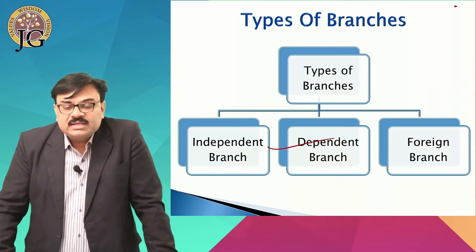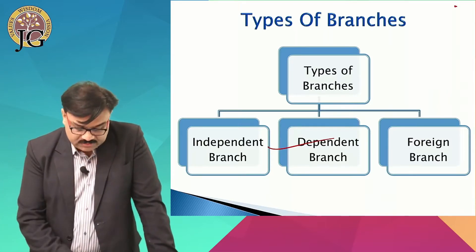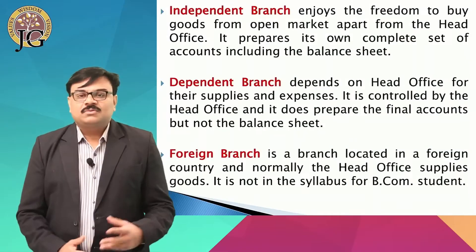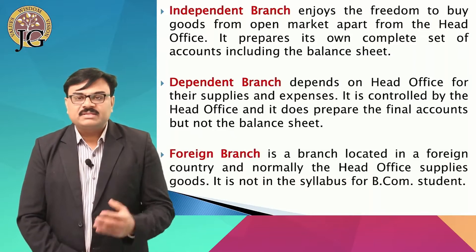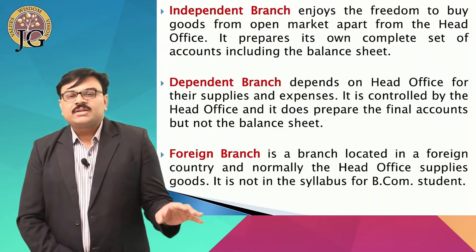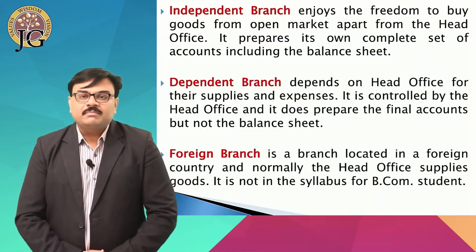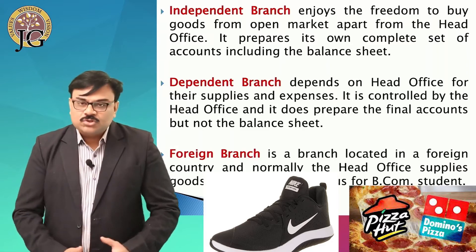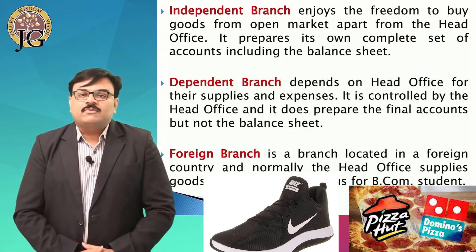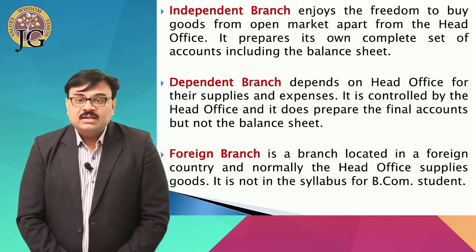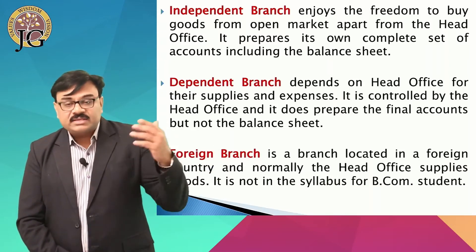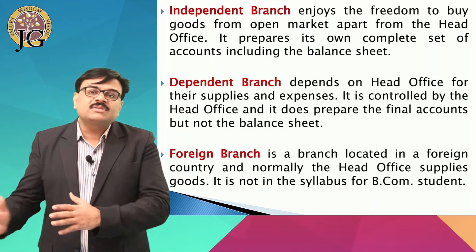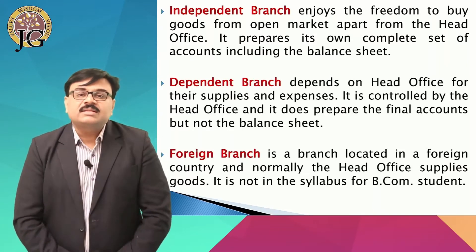There are three basic types of branches: first is independent branch, second is dependent branch, and third is foreign branch. For example, Domino's Pizza, Pizza Hut, Reebok, or Nike shoes are all examples of independent branches, because what they serve in India they do not serve abroad — they have completely different products in different markets.